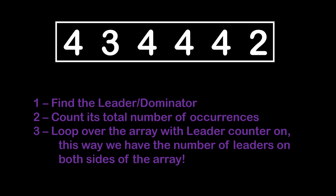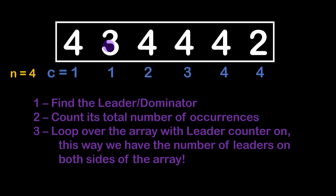Then we count the total occurrences of the leader in the array. After that, we loop over the array with a variable that counts leader occurrences so far. This way we have access to the number of leaders on both the left and right sides, separated by the current index. For example, the total occurrences of number four — the dominator — is n, which equals four. The counter increments each time we encounter a leader value.